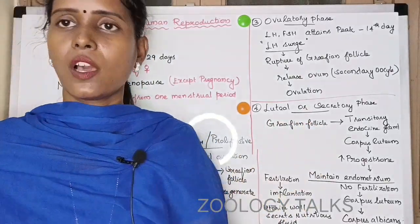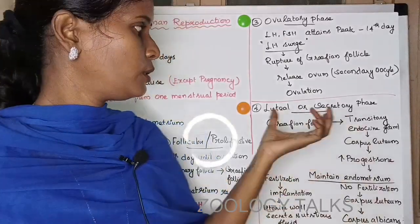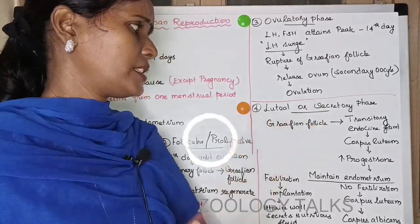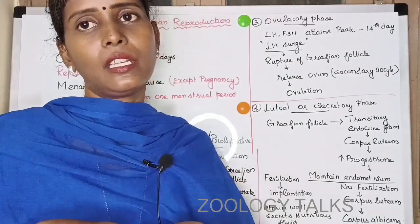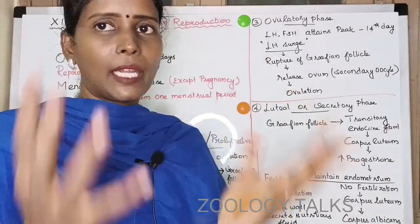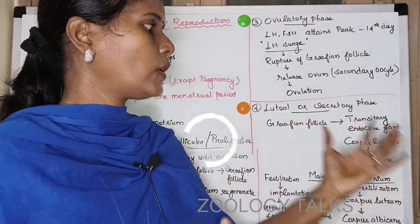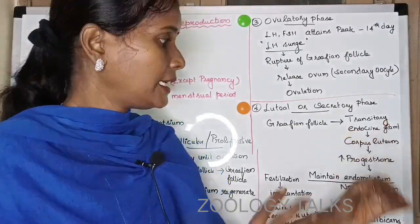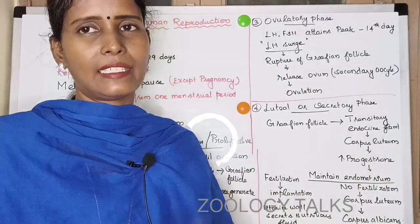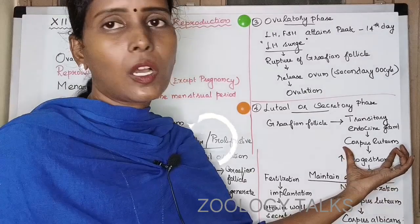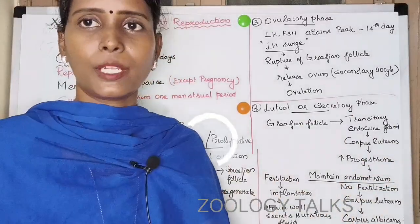The final phase is the luteal or secretory phase — it has two names. After ovulation, the Graafian follicle has already released the oocyte. The remaining cells and structures are transformed into a transitory endocrine gland called the Corpus Luteum. Because of the Corpus Luteum, this phase is called the luteal phase.